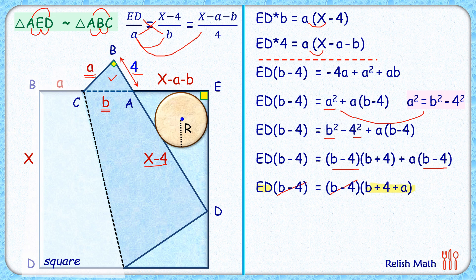That is, the perimeter of this small triangle is equal to the length of ED.